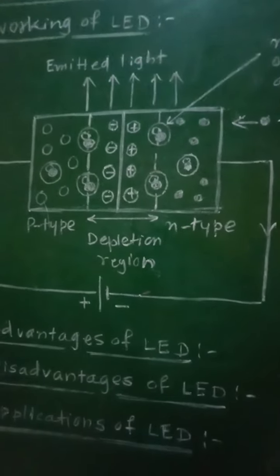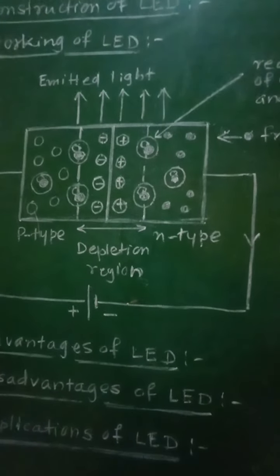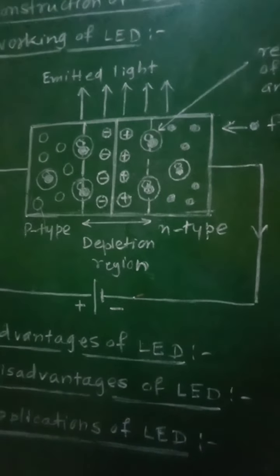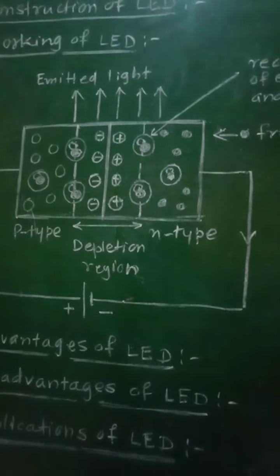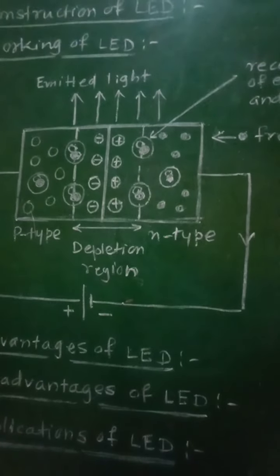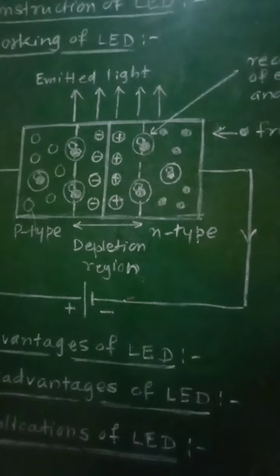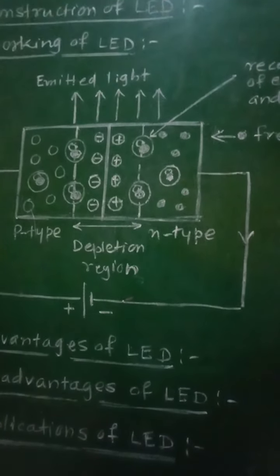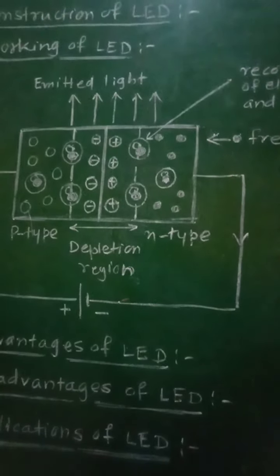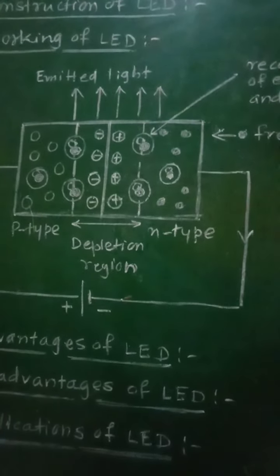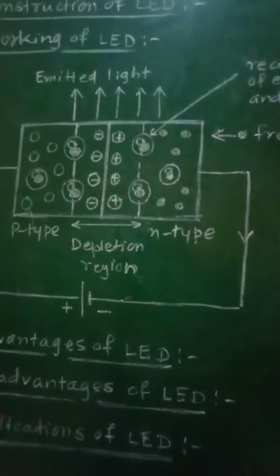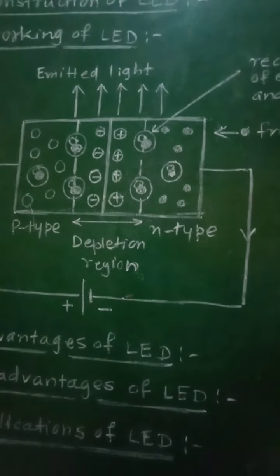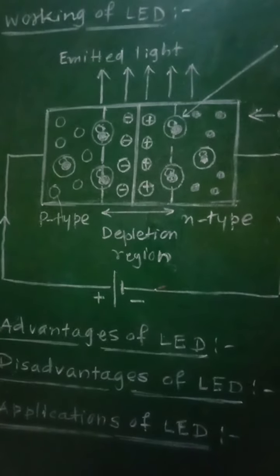For example, aluminium gallium arsenide emits infrared radiations. Gallium arsenic phosphide gives rise to yellow light. Aluminium gallium phosphide gives rise to red light.